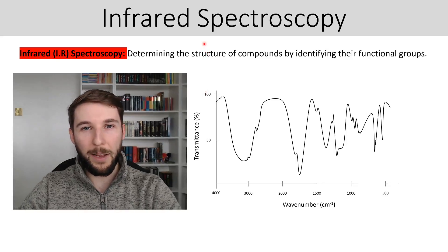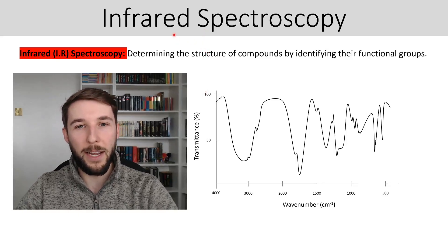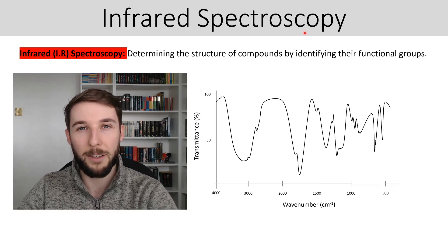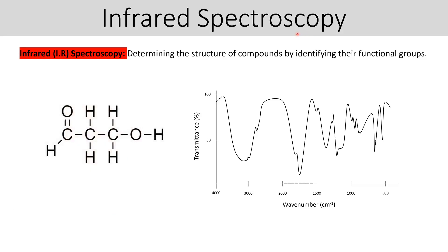Hello Year 12, we're back and today we're looking at infrared spectroscopy, so let's get started. To begin with, infrared spectroscopy is a technique used to determine the structure of organic compounds by identifying their functional groups.